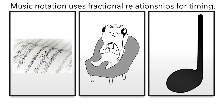Hear that lovely piano playing! Music notation uses fractional relationships for timing. For example, a quaver or eighth note is half the length of a crotchet or quarter note. It is a quarter of a minim or half note, and an eighth of a semibreve or whole note.